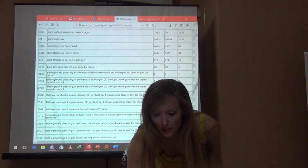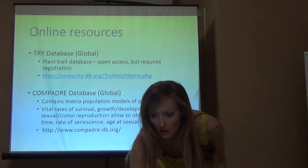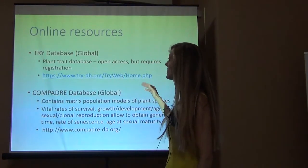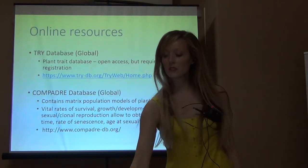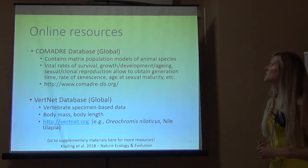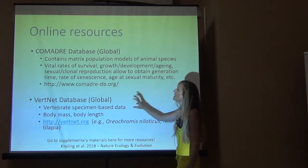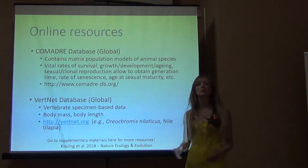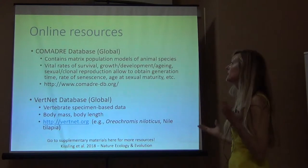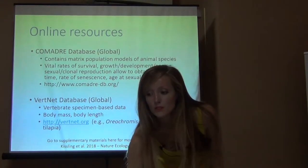So going back to the PowerPoint — TRI and Compadre are both plant trait databases. And then there are animal trait databases: Comadre, which Town talked about yesterday, and VertNet, which has a bunch of trait data for vertebrates including body mass and body length.